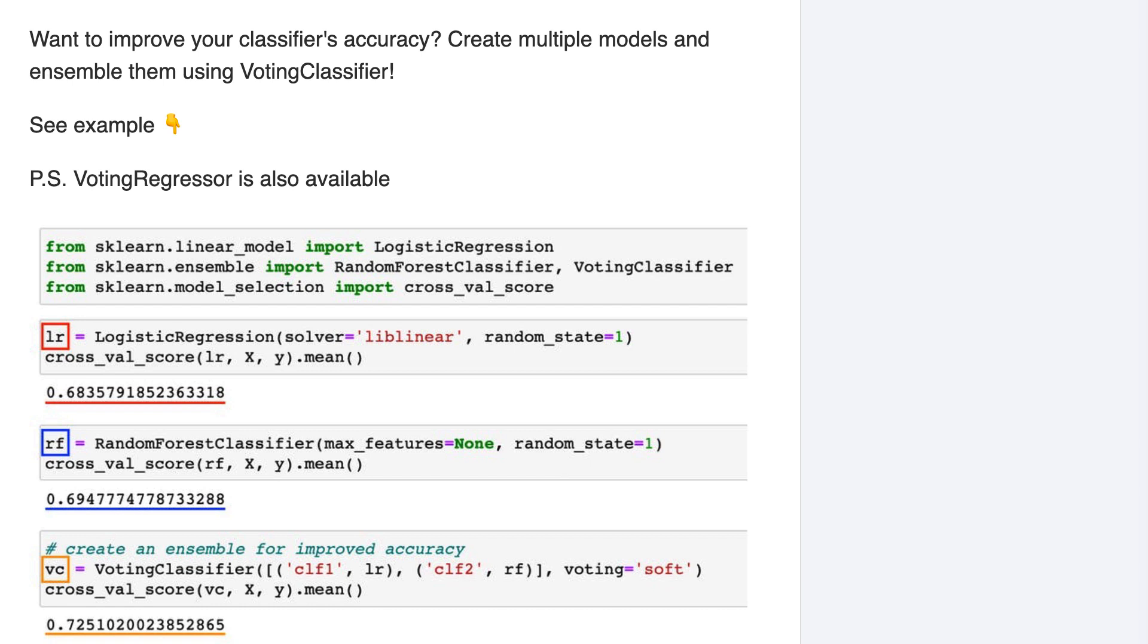Now going back to the code, we created the ensemble using the voting classifier class. We passed it a list of tuples, in which the first element of the tuple is a name, and the second element in the tuple is a classifier object.